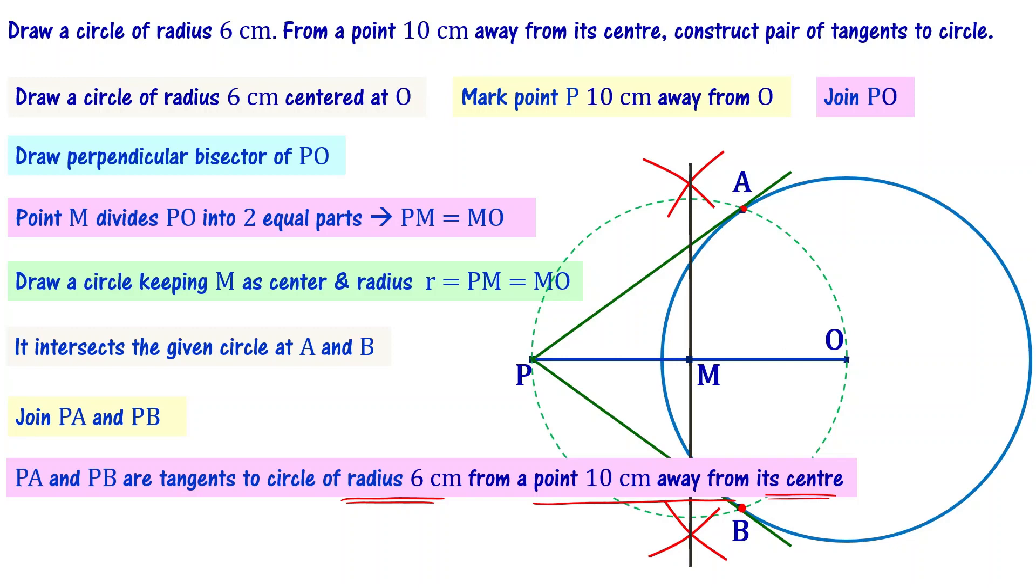Understood? Step by step, you have to note it down and perform all those actions such that you will get a pair of tangents to the given circle. That's the main objective.